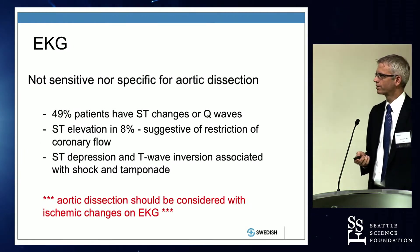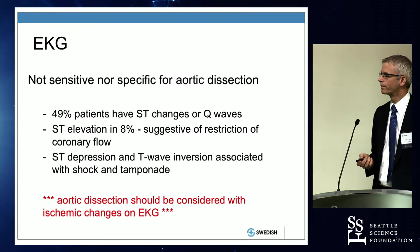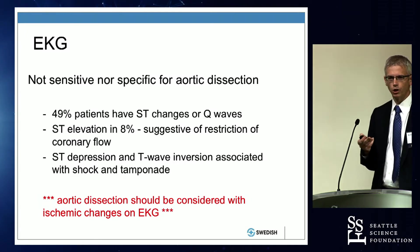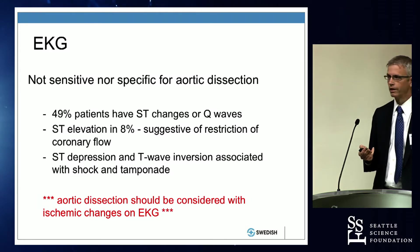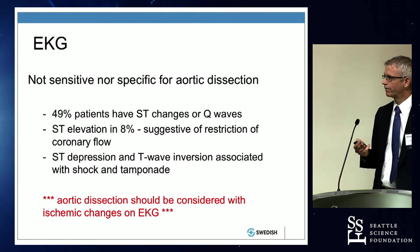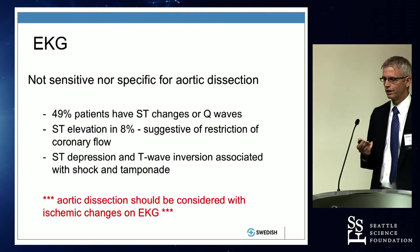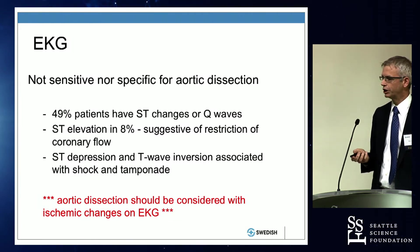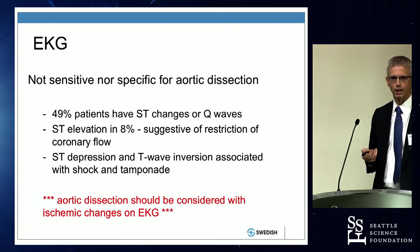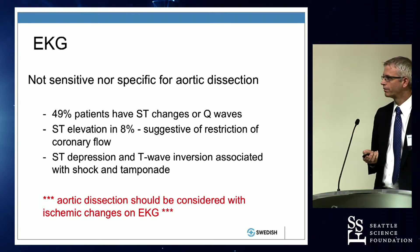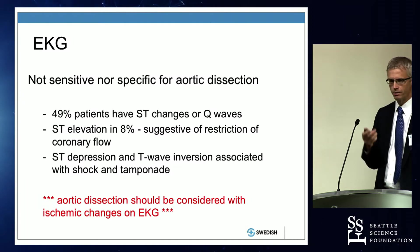The EKG may be useful. If you know the patient has a dissection, it can help tell us if there's coronary ischemia. If you don't know, a normal EKG is not helpful. If the patient has EKG changes, that could obviously be an MI, which is the most common. But everybody with an abnormal EKG — in the back of your mind, always ask: is this an aortic dissection?